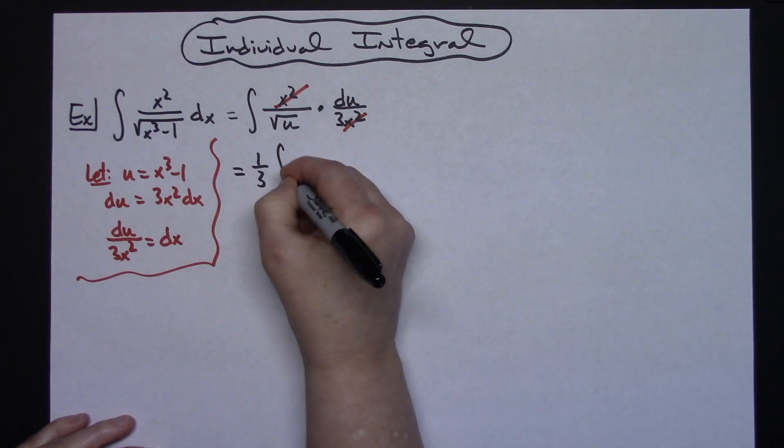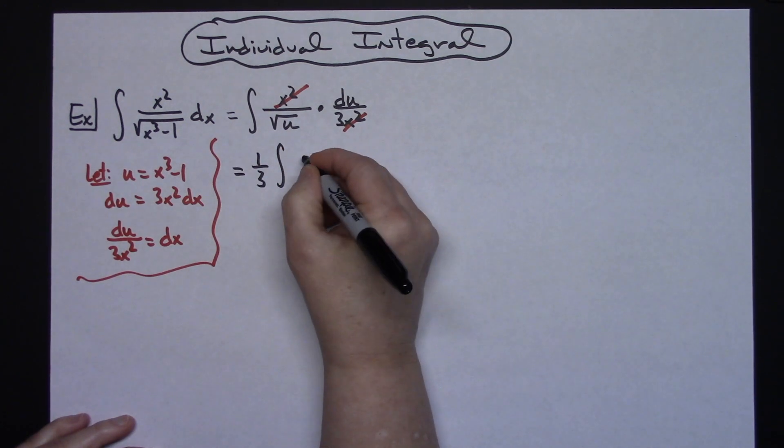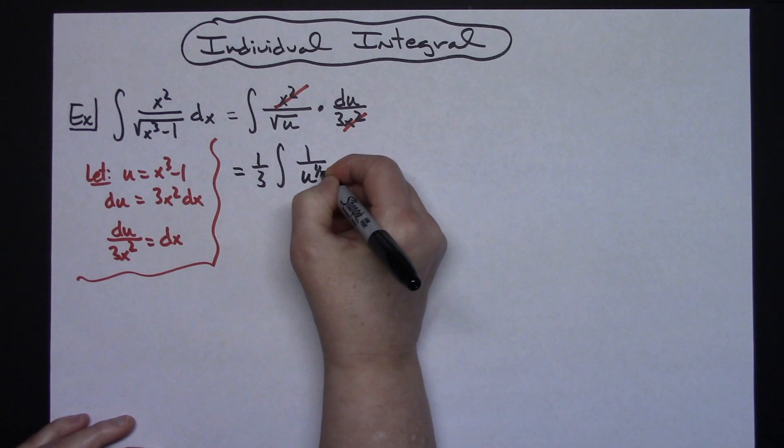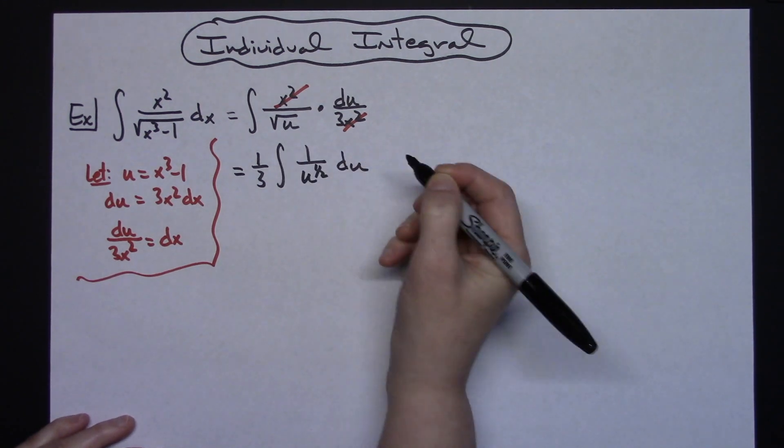So we're going to have 1/3 times the integral of 1 over—I'm going to go ahead and write this as u^(1/2), taking that out of radical form—and then du.